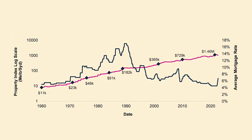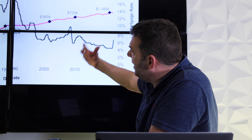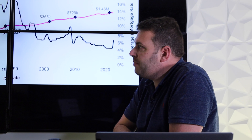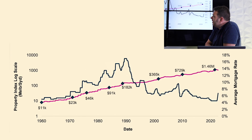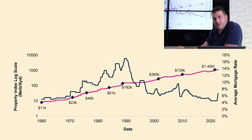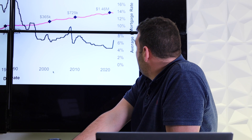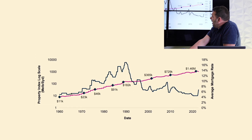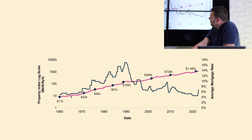What we're looking at here is the property index. The pink line is property values — an average property value index — just Melbourne and Sydney from 1960 through to today. And we also have the black line, the dark line here, which is interest rates — the average mortgage rate.